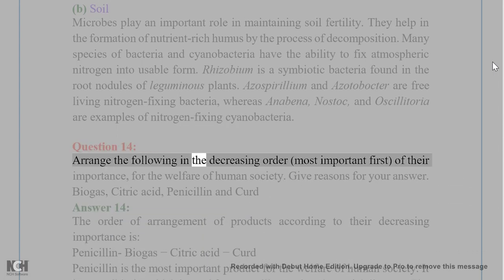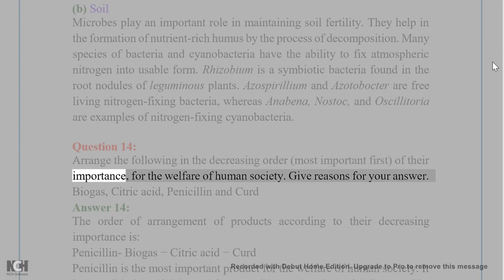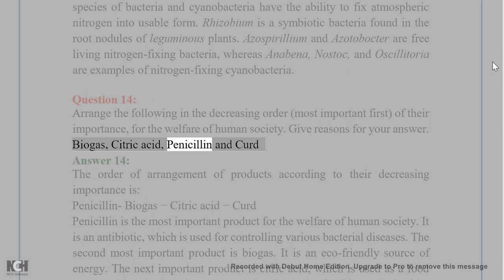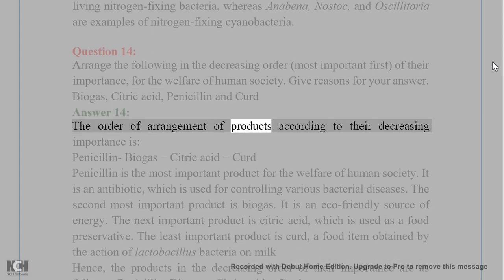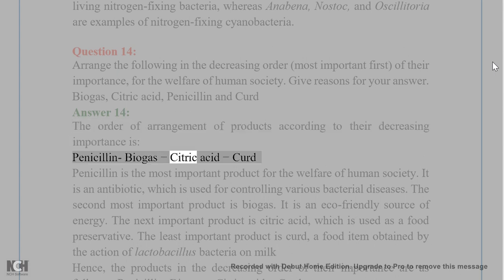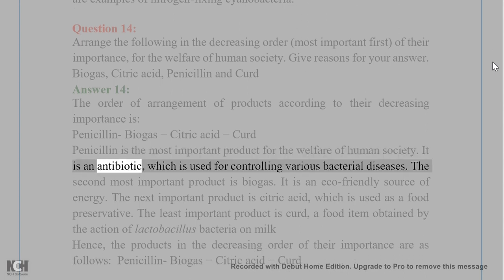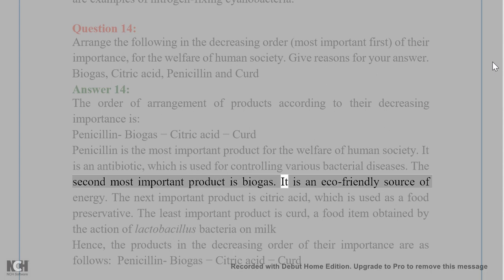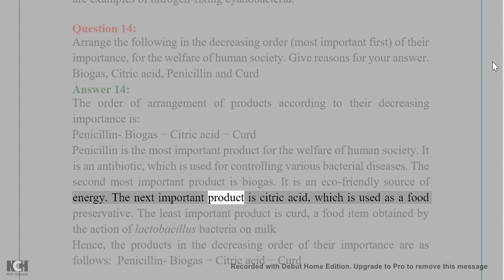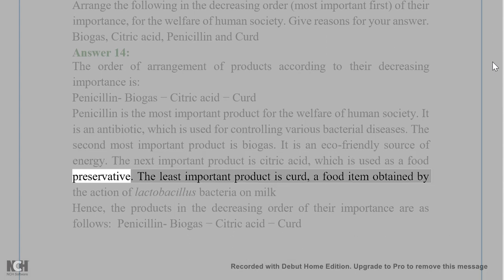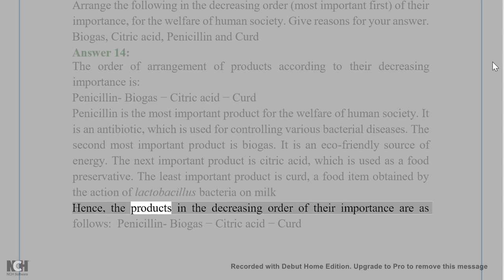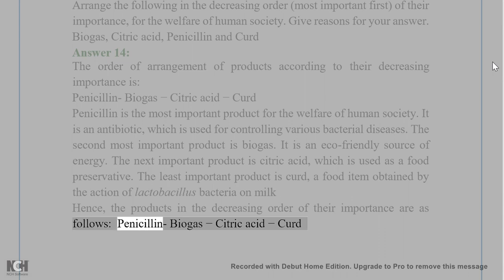Question 14. Arrange the following in decreasing order of importance for the welfare of human society, and give reasons: biogas, citric acid, penicillin, and curd. Answer 14. The decreasing order is: Penicillin, Biogas, Citric acid, Curd. Penicillin is the most important — it is an antibiotic used for controlling various bacterial diseases. Biogas is the second most important as an eco-friendly source of energy. Citric acid is used as a food preservative. Curd is the least important, obtained by the action of Lactobacillus bacteria on milk.